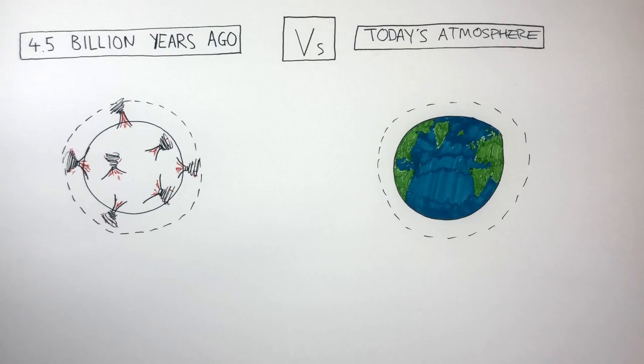Ancient Earth had a lot of volcanic activity, which caused Earth to be very hot and drastically affected Earth's atmosphere. Whereas in today's Earth, there is a lot less volcanic activity, so our atmosphere is very different.